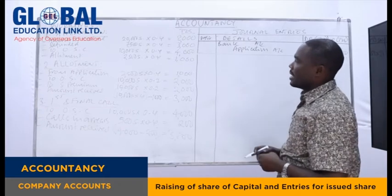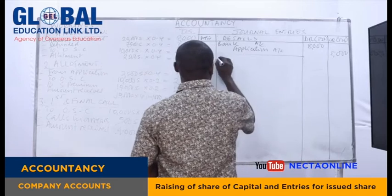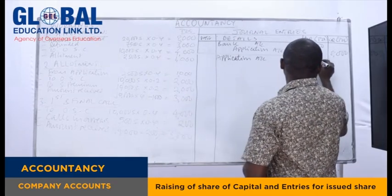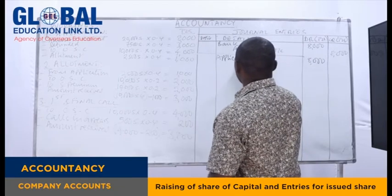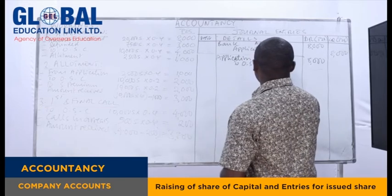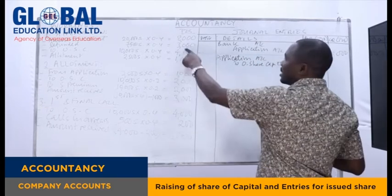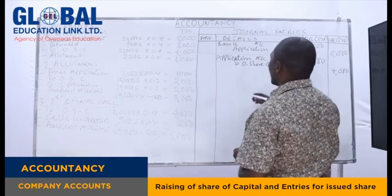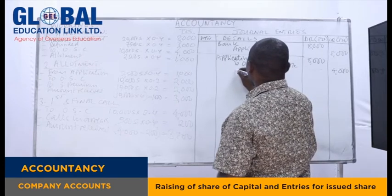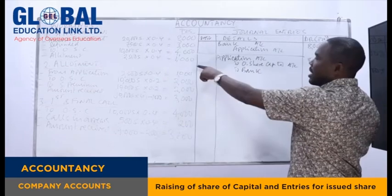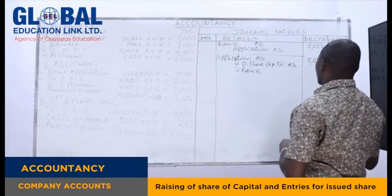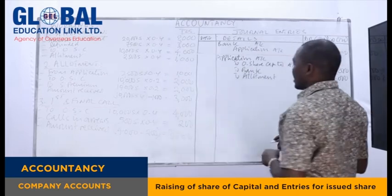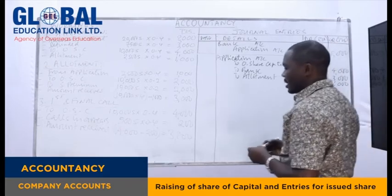To allot these shares, we close the application account by debiting application with TZS 8,000. We credit ordinary share capital account with TZS 4,000, credit bank account with TZS 3,000 for the refund, and the balance of TZS 1,000 is transferred to allotment account.